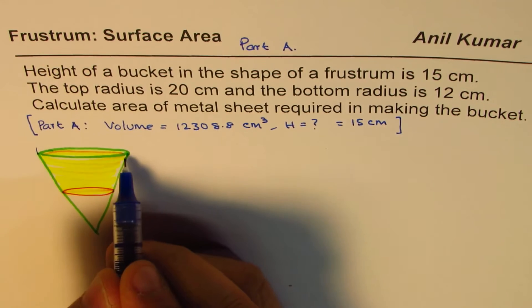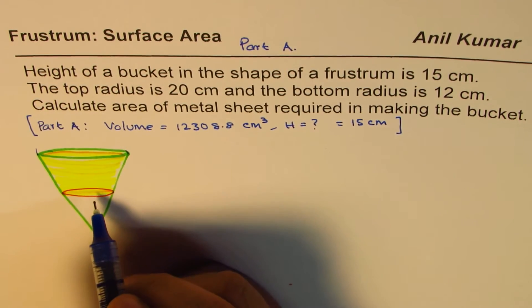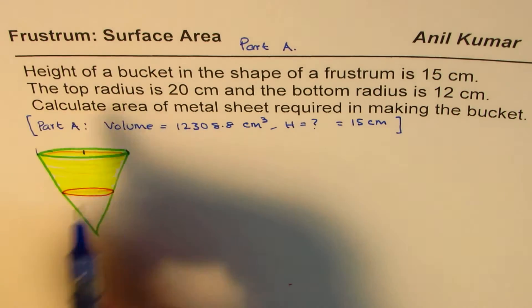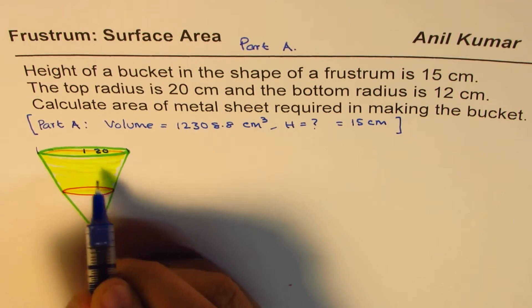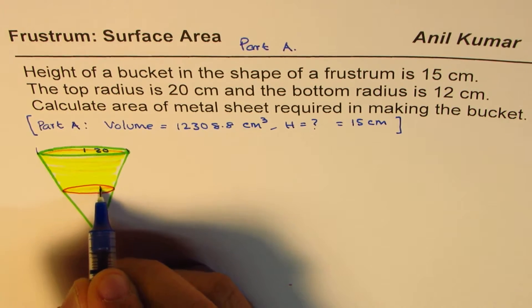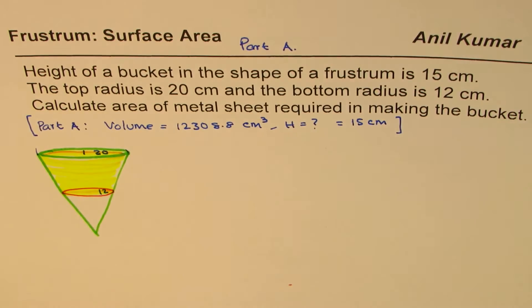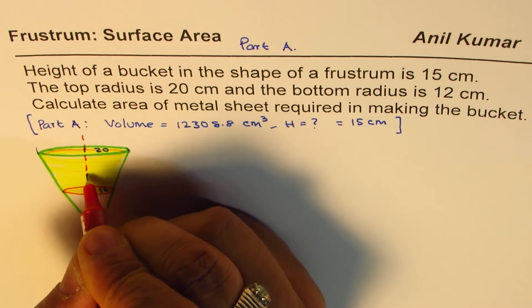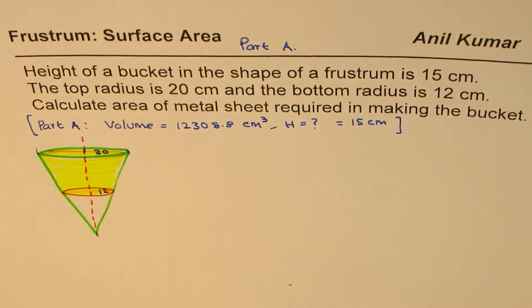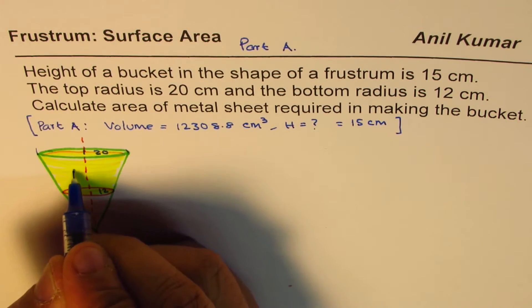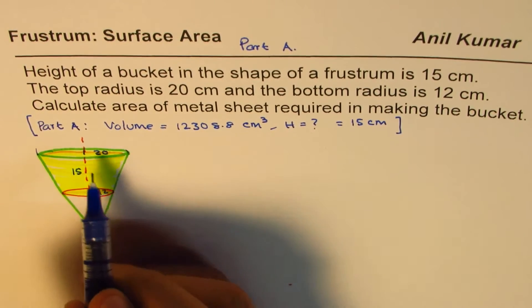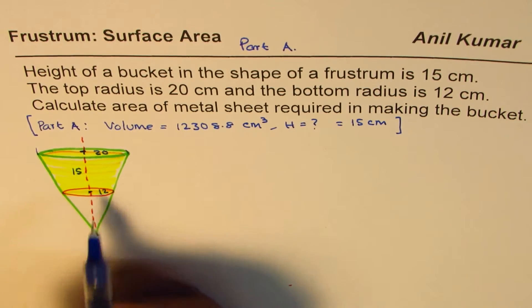So here we have a bucket. We are given that the top radius is 20 and the bottom radius is 12, and the height is 15. Here the height is given to us as 15 — or rather we calculated it from the volume earlier. So this is the situation.